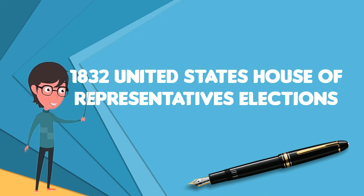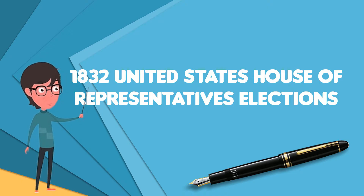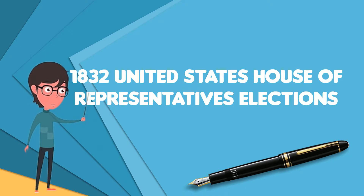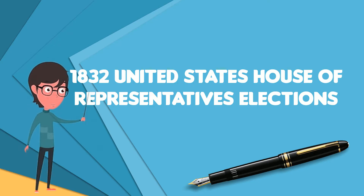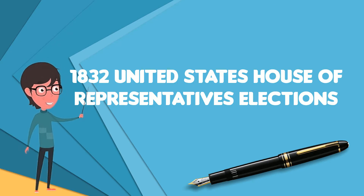The Jacksonians gained 17 seats, picking up several new seats in districts that were created following the 1830 census. The rival National Republican Party lost a net total of three seats.